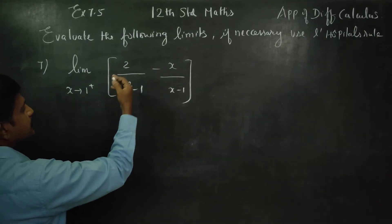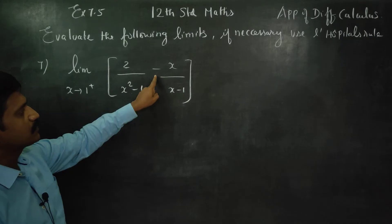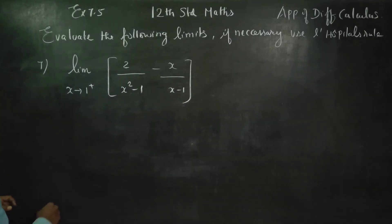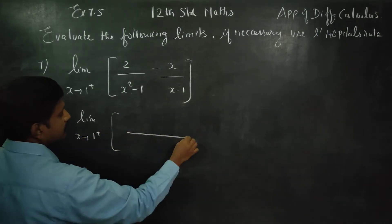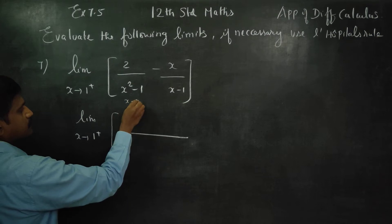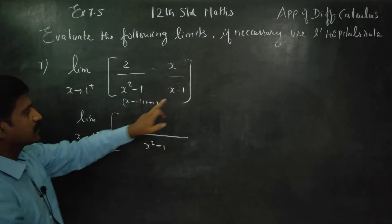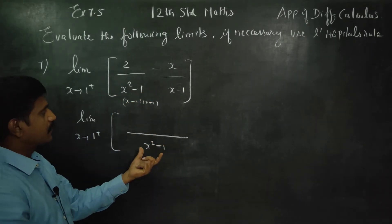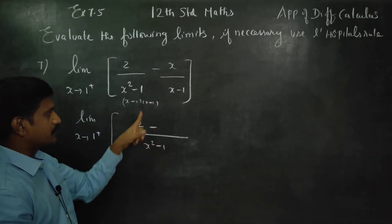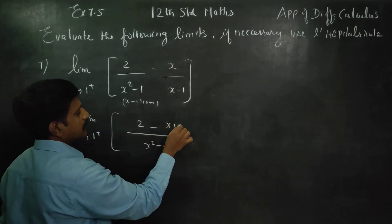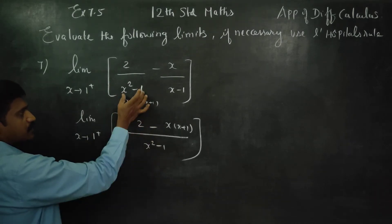Right hand limit is 1 positive. In this case, I will take LCM for this. x turns to right hand limit 1. LCM — it is actually a plus b into a minus b. It is LCM: x squared minus 1. This is my LCM. If you want to see x squared minus 1, then I have x minus 1 and x plus 1. That is the first thing: x into x plus 1.